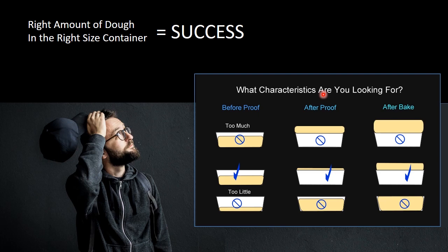The container size for proofing, whether it's a pan as in these instances that I'm showing here, or some type of a proofing basket, everything has to be calculated based on the amount or weight of the dough that you are putting into that container.